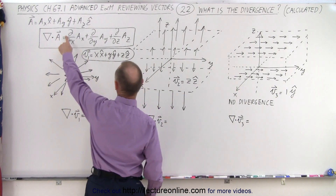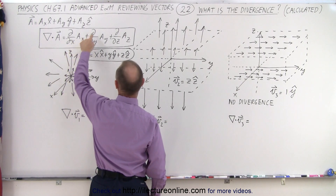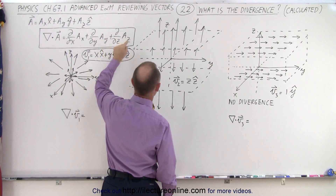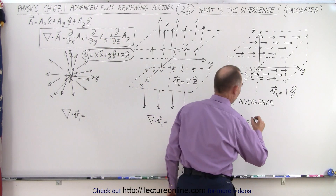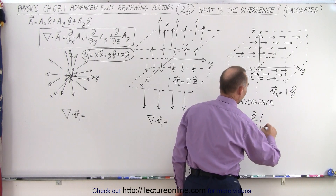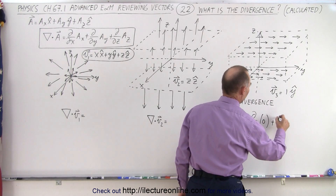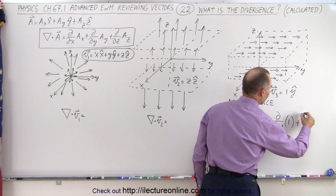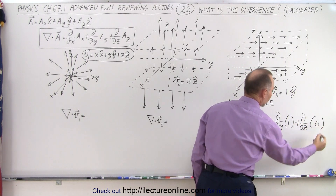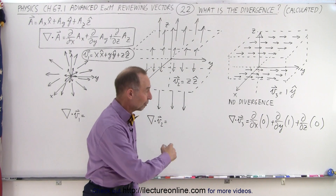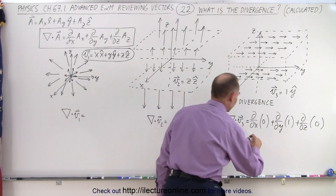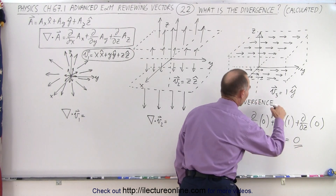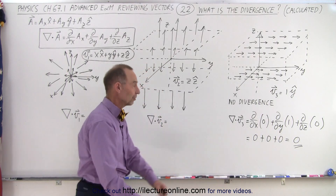To get the divergence, we take the partial derivative with respect to x of the x component, plus the partial derivative with respect to y of the y component, plus the partial derivative with respect to z of the z component. For the constant function, there is no x component so it's 0, plus the partial derivative with respect to y of 1, which is 0, plus the partial derivative with respect to z of the z component, which is also 0. The partial derivative of a constant equals 0, so this becomes 0 plus 0 plus 0, which is 0 — confirming no divergence because the vector function doesn't change.